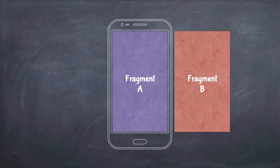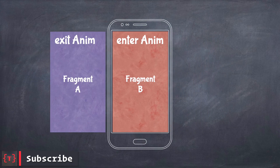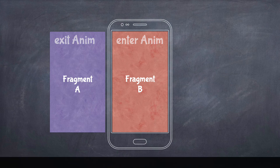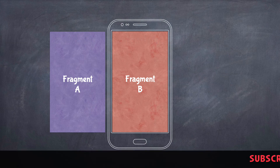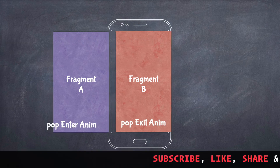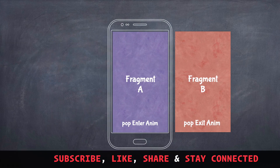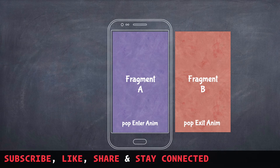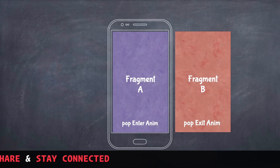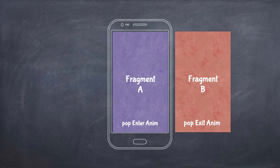To recap: going forward from Fragment A to Fragment B — Fragment A takes the exit animation and Fragment B takes the enter animation. Going back from Fragment B to Fragment A — Fragment B takes the pop exit animation and Fragment A takes the pop enter animation. Those are the four values: enter anim, exit anim, pop enter anim, and pop exit anim.